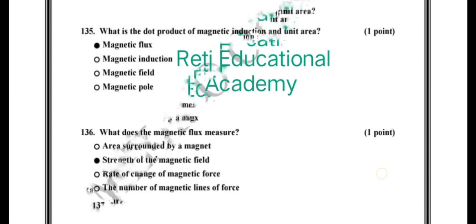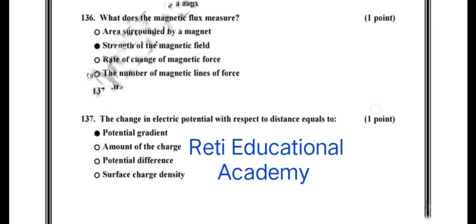Question number 137: The change in electric potential with respect to distance equals to potential gradient. This is the correct answer, potential gradient.